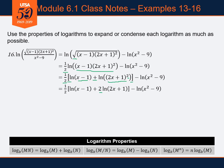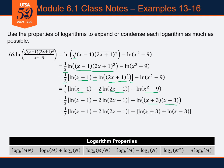I can't split x minus one — no rule for subtraction. I can't split two x plus one — no rule for addition. But I can split the natural log of x squared minus nine because I can factor it: x squared minus nine is a difference of two squares, factorable into x plus three times x minus three. Now we've got a product, so I can split that up into the natural log of x plus three plus the natural log of x minus three.